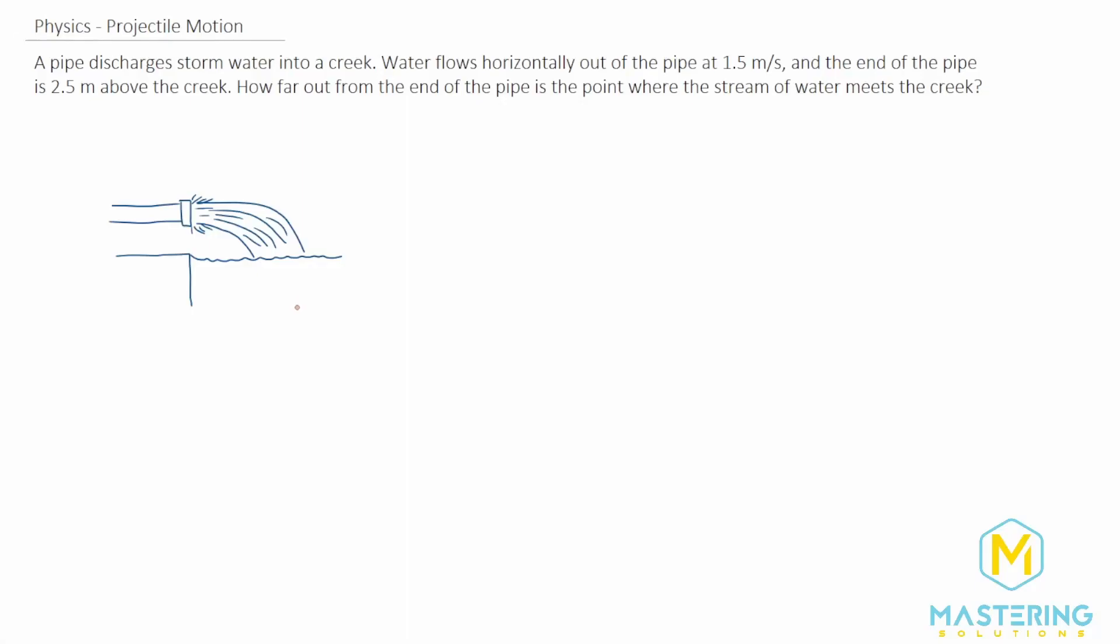Welcome to Mastering Solutions. This projectile motion problem tells us that a pipe discharges stormwater into a creek. I've drawn the picture of the problem right here, and they tell us that water flows horizontally out of the pipe at 1.5 meters per second.